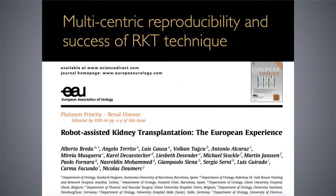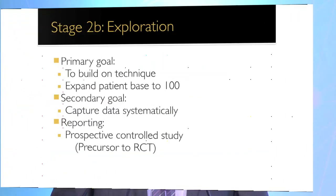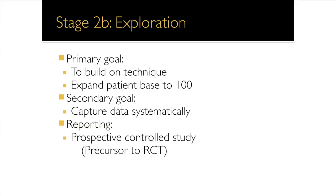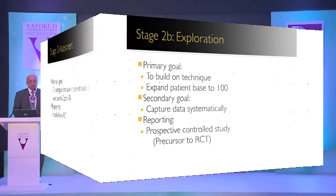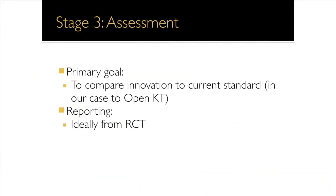A publication on multi-centric reproducibility and success of robotic kidney transplant from Europe demonstrated that six different centers could start and safely perform the procedure. The next phases — 2B and 3 — are Exploration and Assessment, the 'E' and 'A' of IDEAL. The primary goal is to build on technique, expand the patient base to about 100, and the secondary goal is to capture data systematically. Reporting is done via a prospective controlled study comparing the innovation to the current standard — in this case, open kidney transplant.